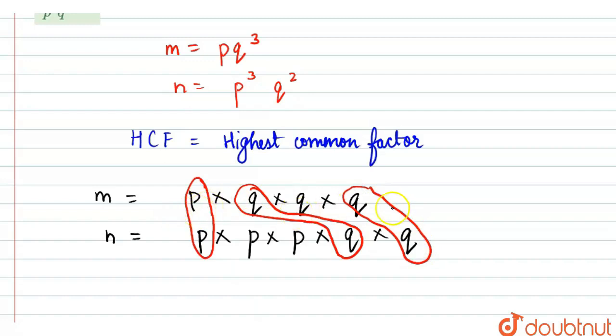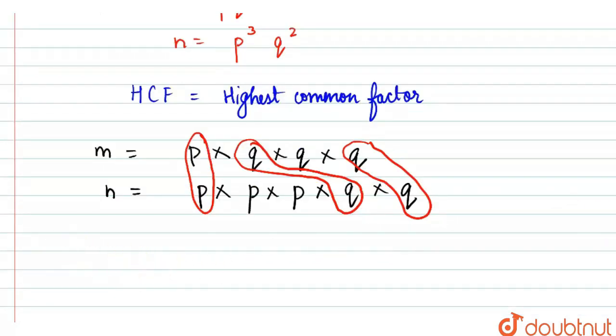So we have P, Q into Q. Highest common factor here is - we can write HCF, highest common factor is P into Q into Q.